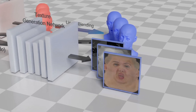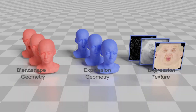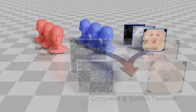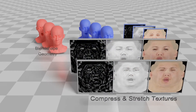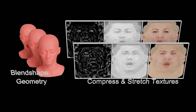With the generated textures and geometries, we are able to render high-quality results. We then generate the compress and stretch texture assets by blending the expression textures guided by the influence maps of the expression geometries. Our four dynamic facial assets consist of the blend-shape geometry and the compress and stretch textures, which can be used to render realistic expressions and animations.